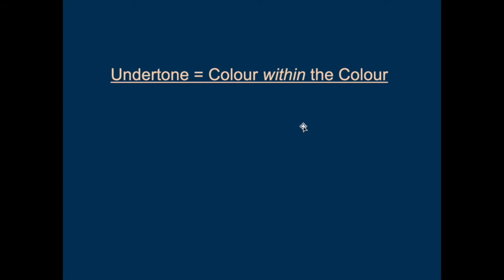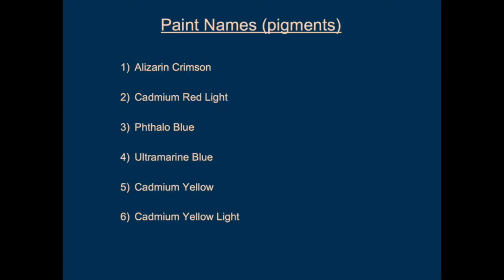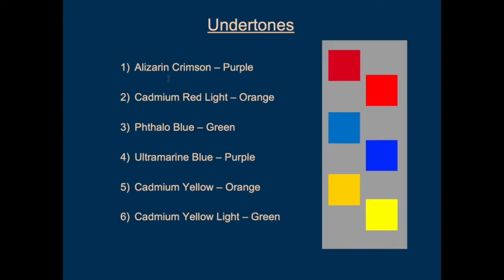Don't think in terms of just reds, yellows, blues — think in terms of what kind of red, specifically what undertone. Looking at our pigment names: alizarin crimson tends toward purple, cadmium red toward orange, and so on for each pigment.